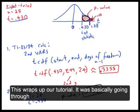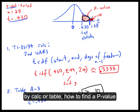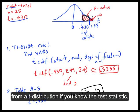So this wraps up our tutorial. It was basically going through by calculator or by table how you could find a p-value from a t-distribution if you know the test statistic.